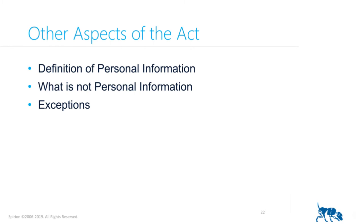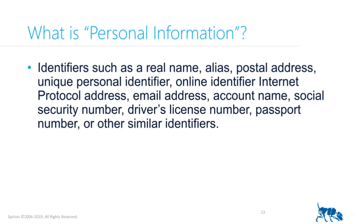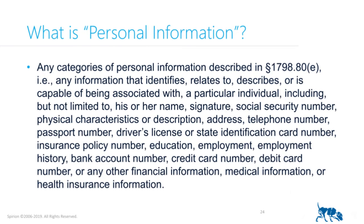A couple of other important aspects of the act: the definition of personal information and what is not personal information. The definition of personal information is going to be a big deal for those in the EU because we've taken the concept and expanded it substantially. Personal identifiers you'd expect: name, postal address, unique personal identifier, email address, account name, IP address, social security number. But there's also a very duplicative category copied and pasted from the state data breach notification law — name, signature, social security number, physical characteristics, bank account numbers, employment history. It's a grab bag of just about any kind of piece of information you can imagine. But wait, there's more.